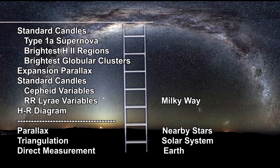In our chapter on the Milky Way, we studied the nearby stars where parallax told us how far away they were. We developed the HR diagram as a way to calculate luminosity based on temperature and spectral analysis. We covered key standard candles such as Cepheid and RR Lyra variables, as well as Type Ia supernova.